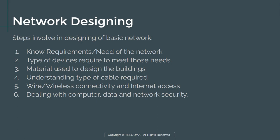The next step is to know the type of devices required to meet this need — devices like switches, routers, and workstations, and how many workstations we require. Then we need to know the materials used in the building, such as reinforced walls and areas where signals can penetrate. After that, we have to understand the type of cable required, such as Cat 5e cable, coaxial cable, or twisted pair cable, choosing the best one according to network requirements.